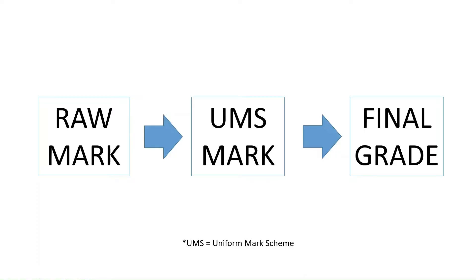So you've got your results slip. On there, it says the raw mark you got in each of the units — your Part A and Part B result for each of the units. That will be converted into a UMS score, and only when you've converted into a UMS score can you work out the final grade you'll be given. Let's check out those three steps in a bit more detail.